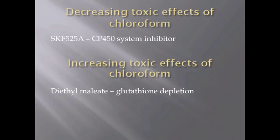Conversely, potentiation of the parent toxin may be induced through the addition of diethyl maleate, which causes an intracellular depletion of glutathione, limiting the metabolic ability of phosgene conversion.